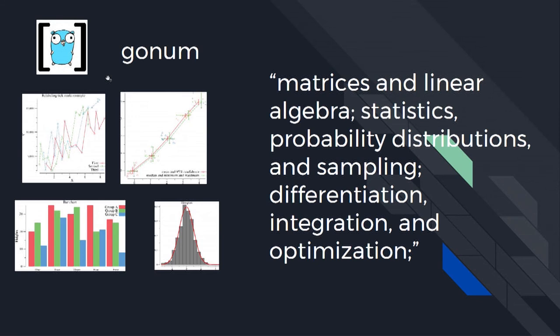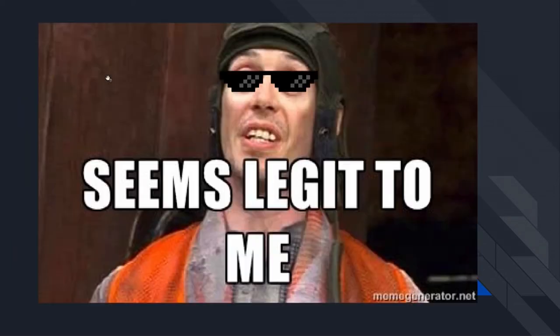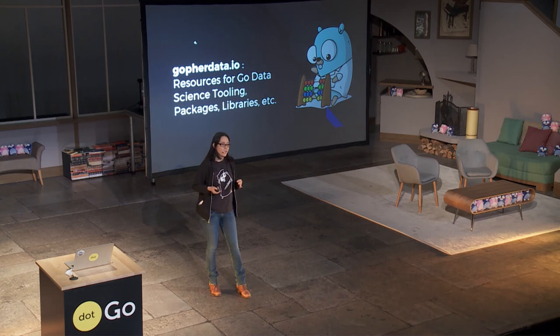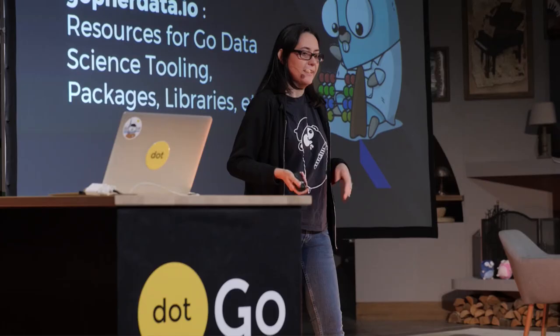GoNum is a set of libraries that allow us to do some maths over data — for example, linear algebra, statistics or probabilities, and plot beautiful graphs. If you have any further questions, you can go to goferdata.io, where you can find resources for Go and data, and some useful information for Go for data science.